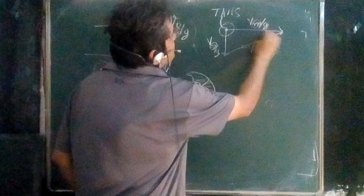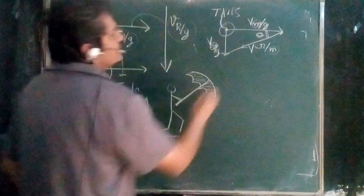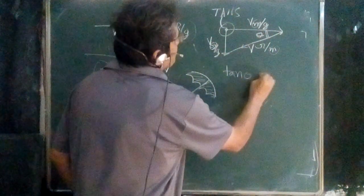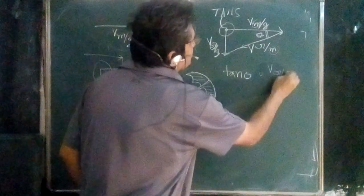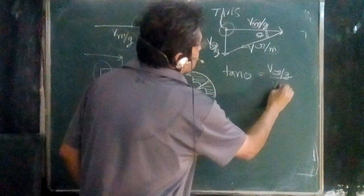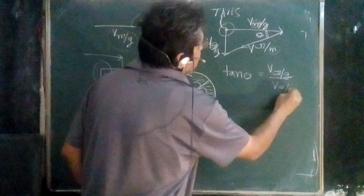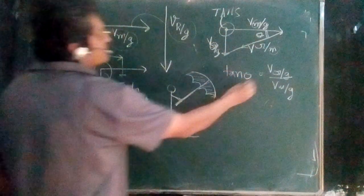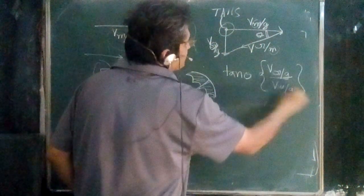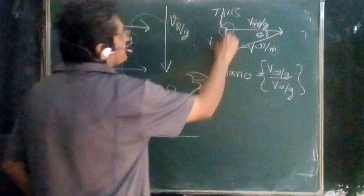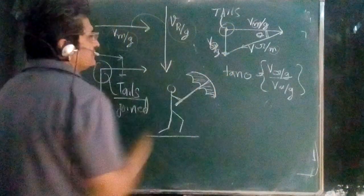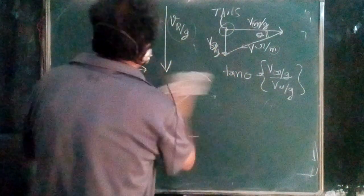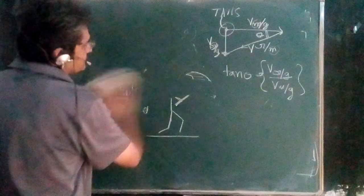This gives the angle at which he has to keep the umbrella. tan θ = V_rain with respect to ground / V_man with respect to ground. This simple formula applies only when the rain is falling vertically — don't use this formula in all cases.